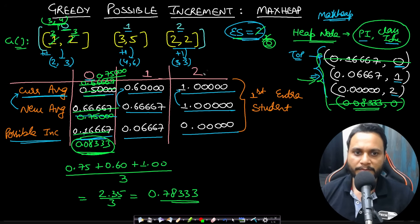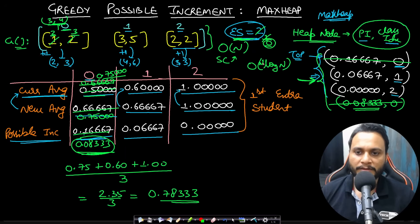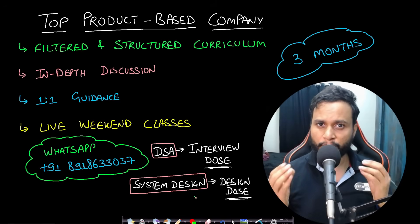The max heap has size equal to the number of classes, so space complexity is O(n). Each heap extraction takes O(log n), and this is repeated for each extra student, which can also be up to n. Therefore the time complexity is O(n log n).